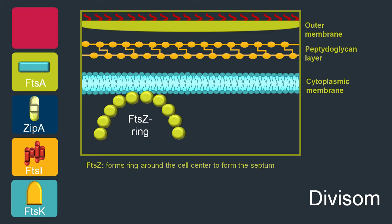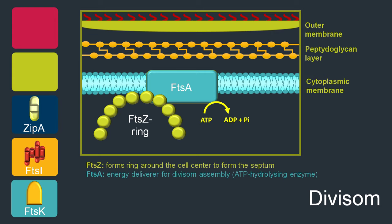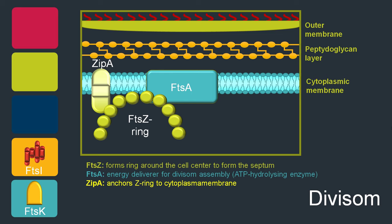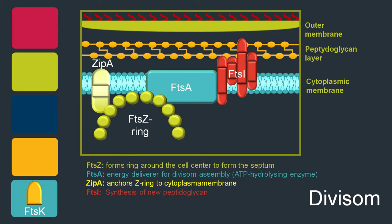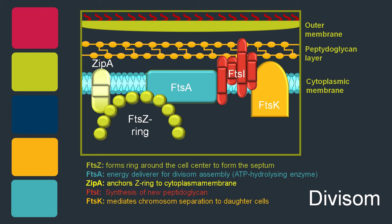The FTSZ ring also recruits other cell division proteins. FTSA is an ATP-hydrolyzing enzyme that delivers energy for cell division. ZipA anchors the FTSZ ring to the cytoplasma membrane. FTSI plays an essential role in synthesizing peptidoglycan, a part of the cell wall. Finally, FTSK is essential for separating both copies of the chromosome to the arising daughter cells.